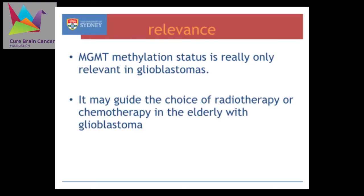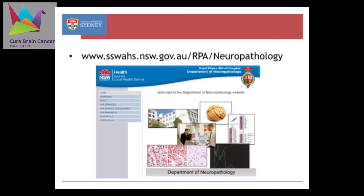It's only really relevant in glioblastomas, not particularly relevant in other tumour types. But it may also guide the choice of radiotherapy or chemotherapy in older patients who are unable to withstand the harsh regime of combined chemoradiotherapy. Oncologists might decide to give chemotherapy if the MGMT is methylated, and radiotherapy if it's not, knowing the patient can't cope with both. So that's gradually creeping in as a guide to treatment choice.